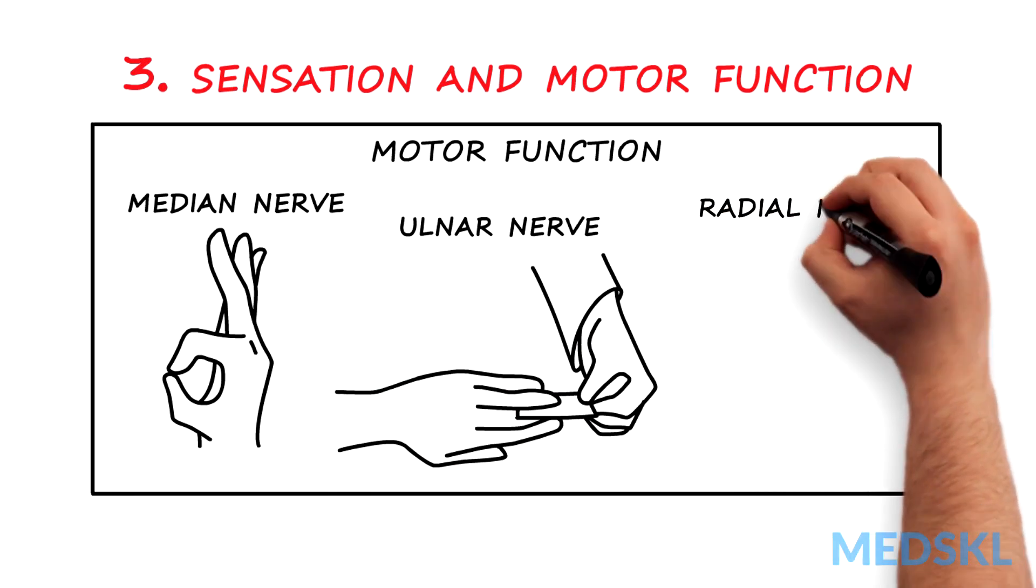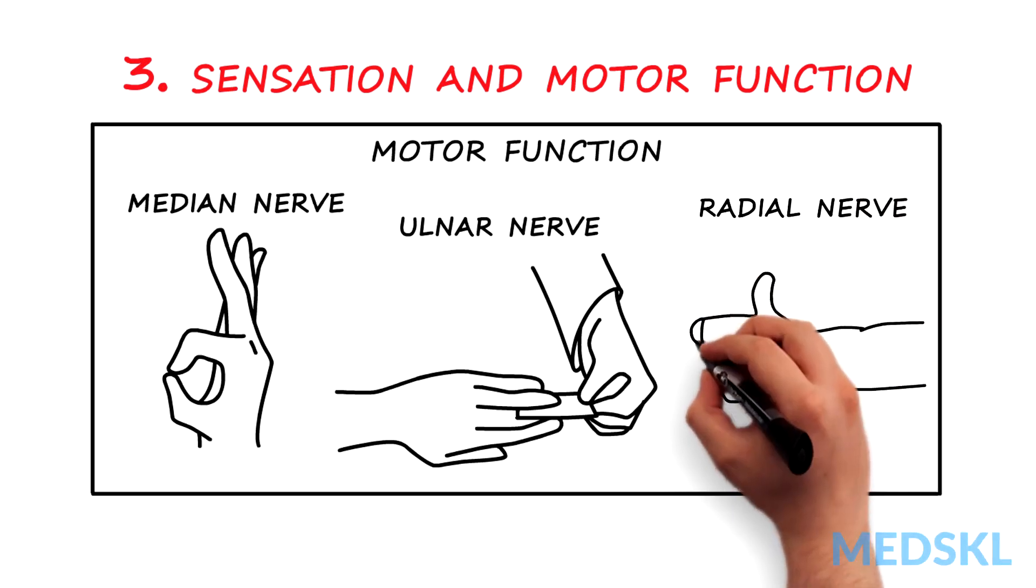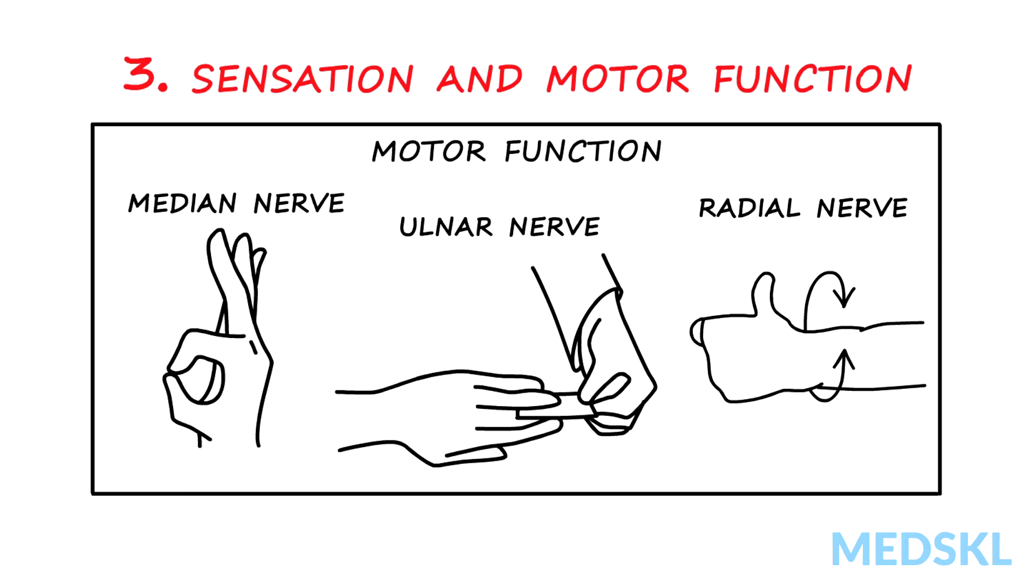Finally, the radial nerve, looking at extensor muscle function. Test by asking the patient to give a thumbs up and to twist their wrist.